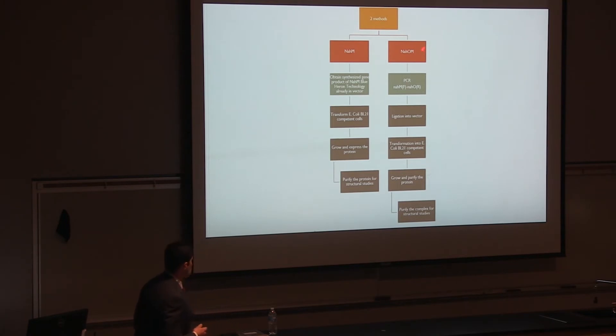Regarding NAHOM, we want to obtain a PCR gene product for the entire gene, NAHOM, using the forward primer for NAHM and the reverse primer for NAHO. Next, we want to ligate the gene into a vector and transform the gene into E. coli competent cells. Next, we want to grow the cultures, the cells, and purify the protein for structural analysis.